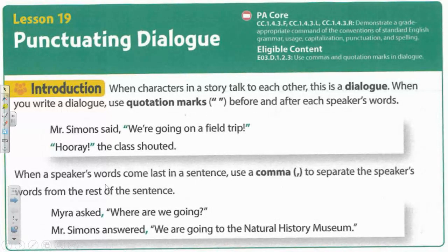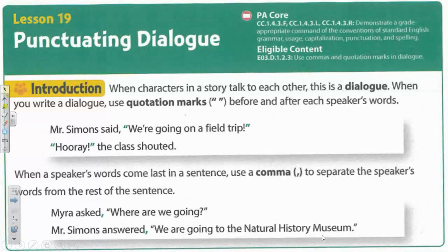When a speaker's words come last in a sentence, use a comma to separate the speaker's words from the rest of the sentence. For example, Myra asked, comma, where are we going? Mr. Simmons answered, comma, we are going to the Natural History Museum.